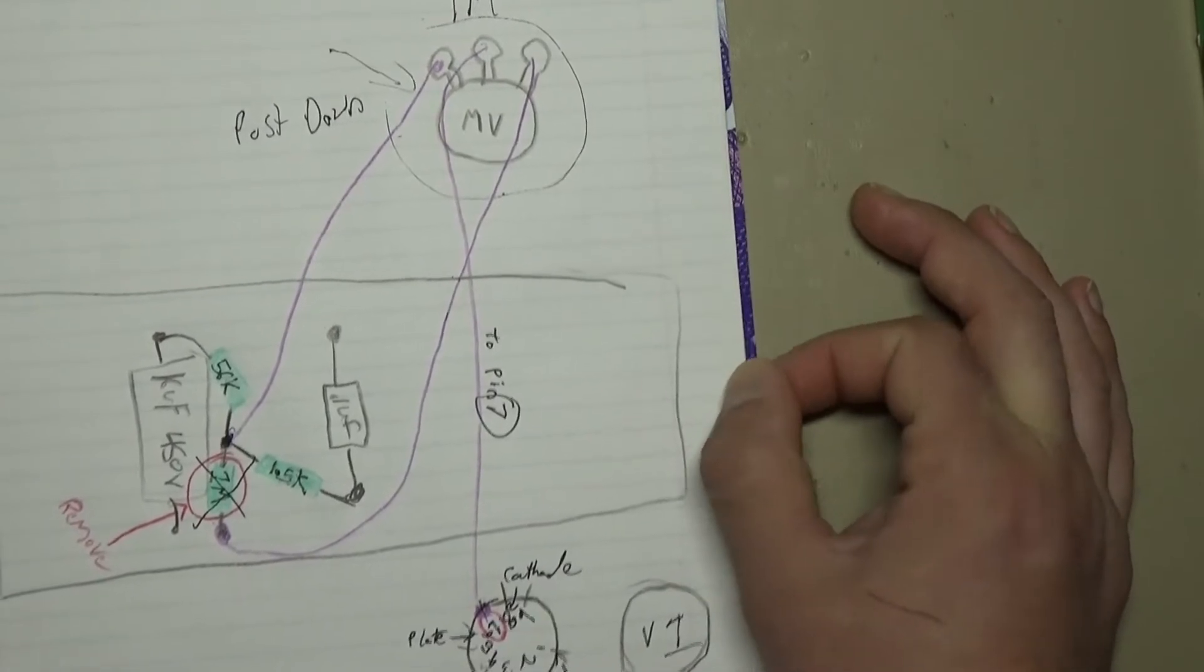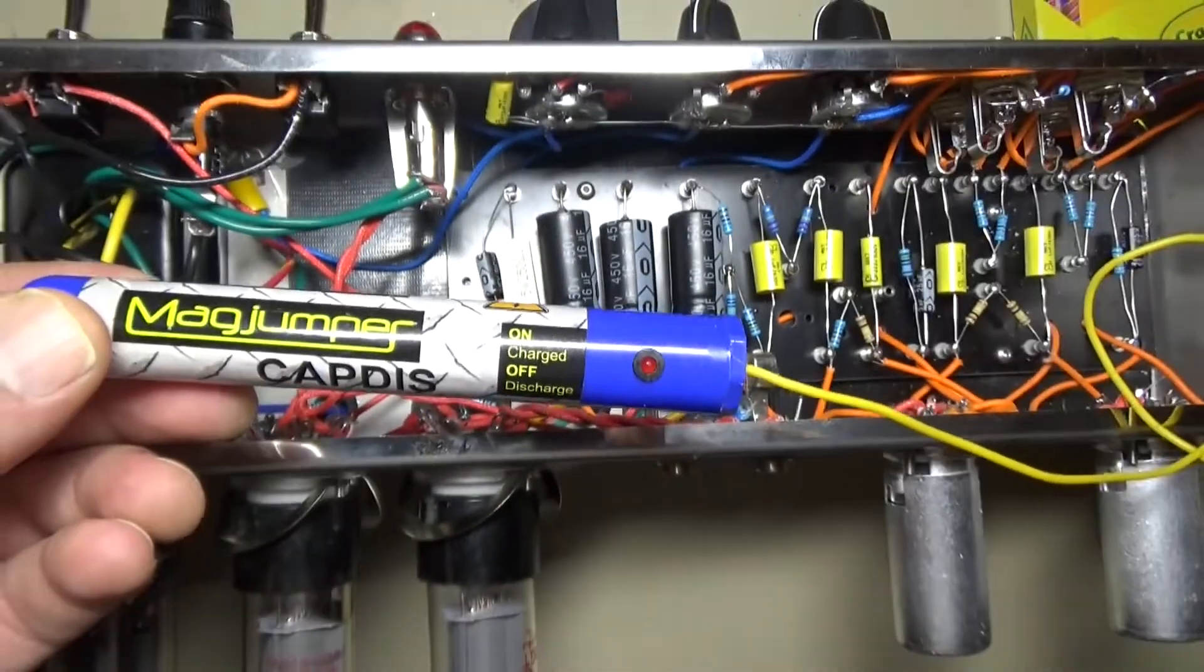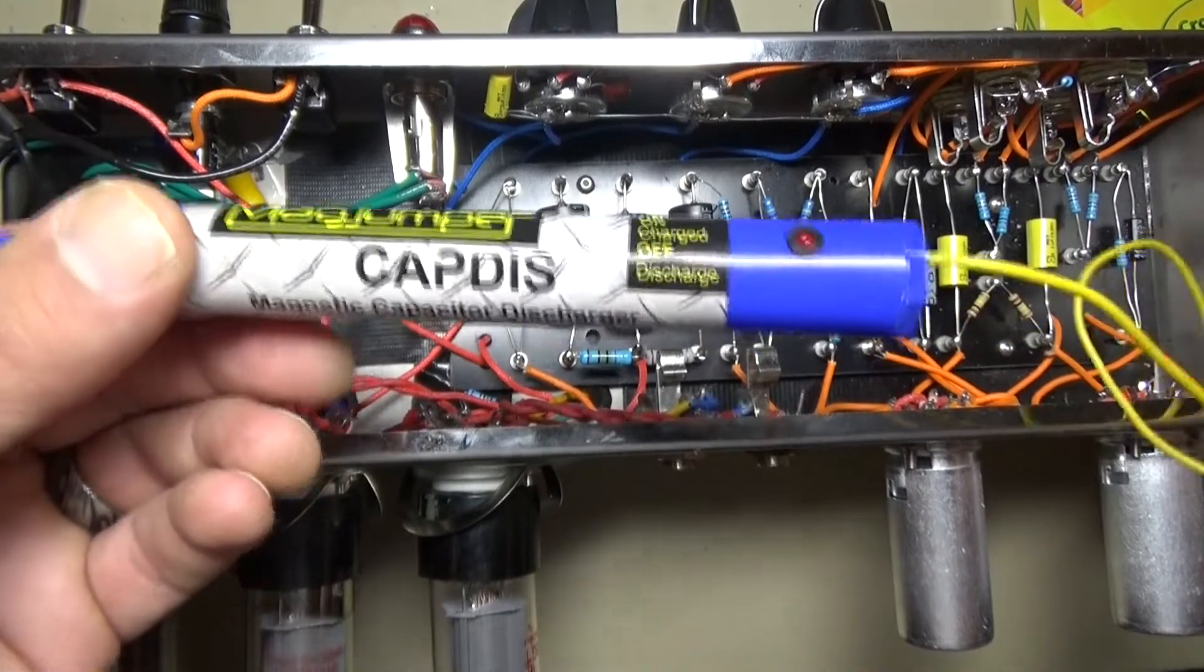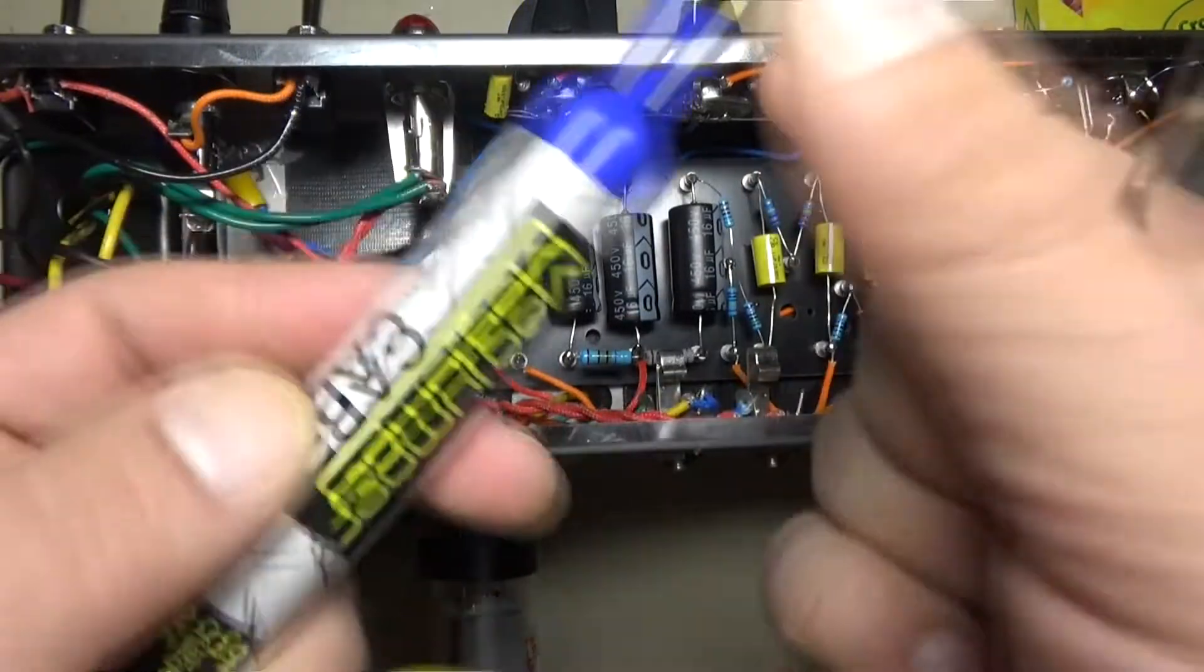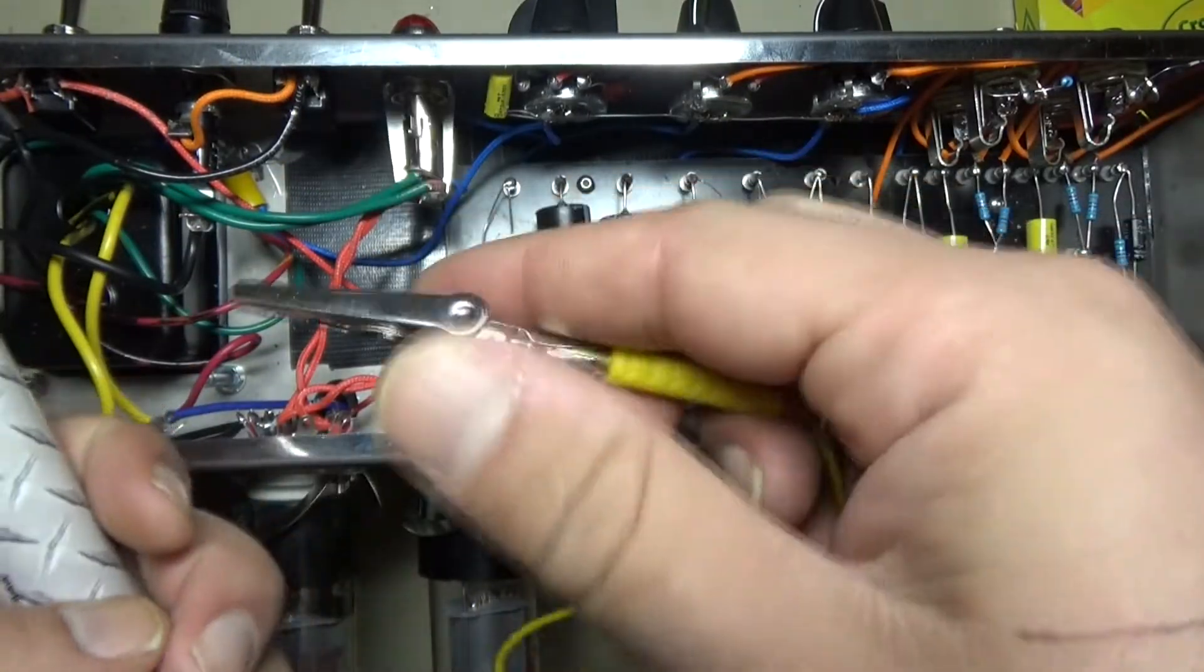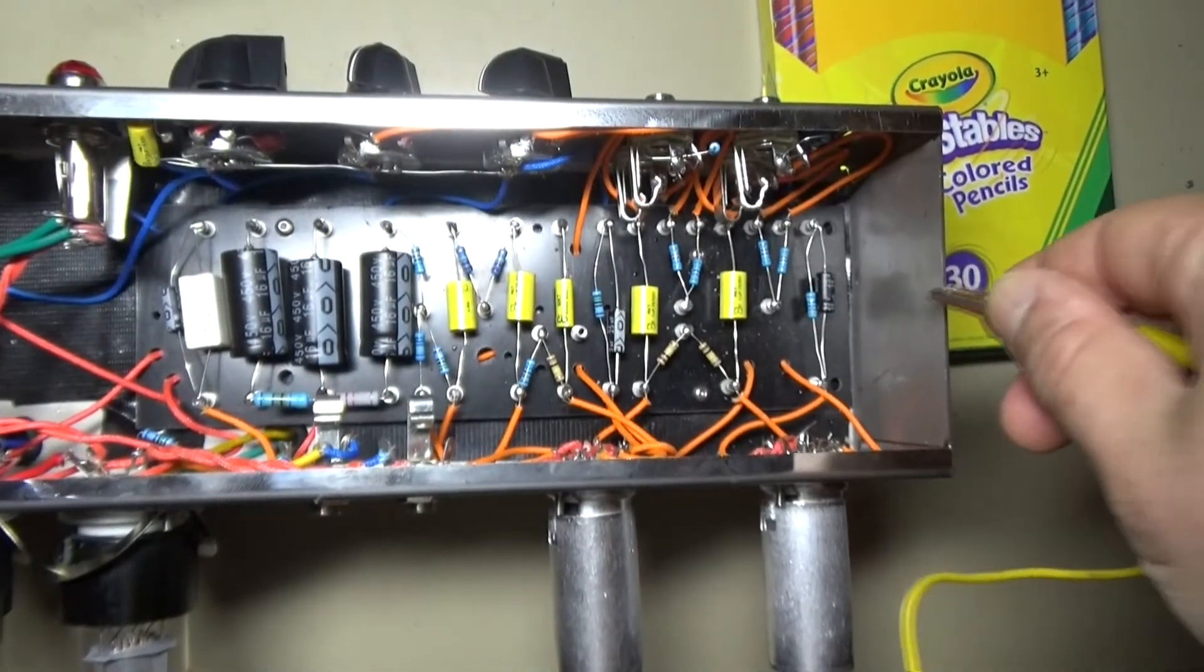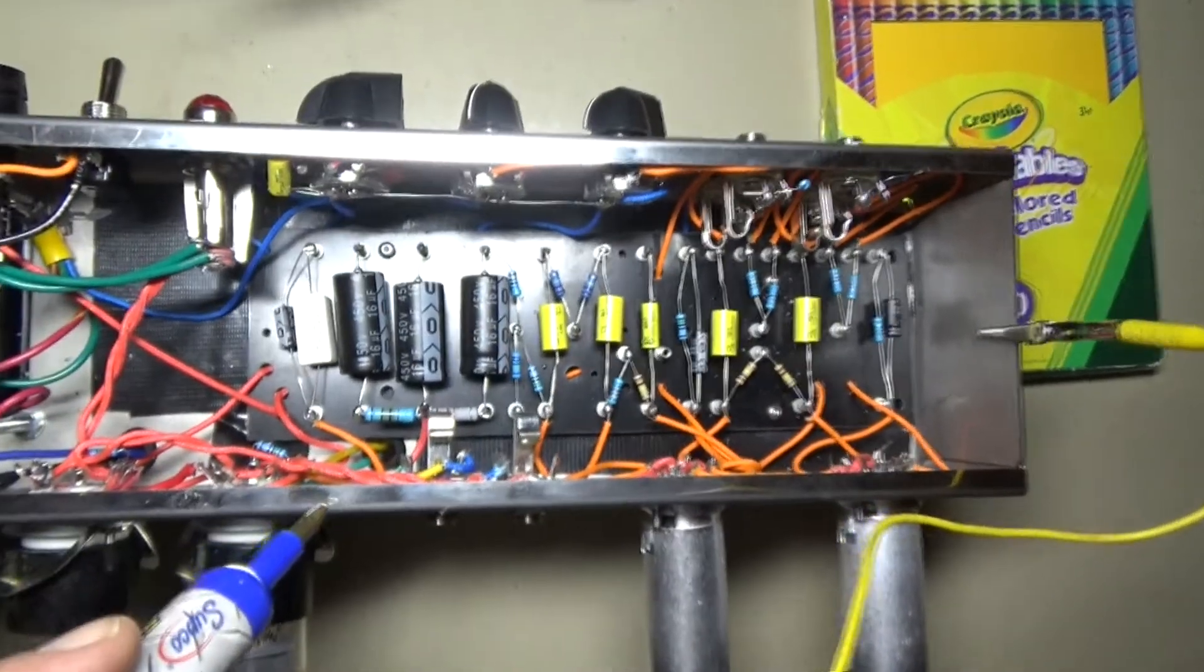First thing we're going to do is drain the filter caps. Now how does this work? All right, I got this off of Amazon and it is really a great little device. Basically, it's just a resistor in there and it's connected to an alligator clip. And so I put the alligator clip on a ground point, which is going to be the chassis right here.